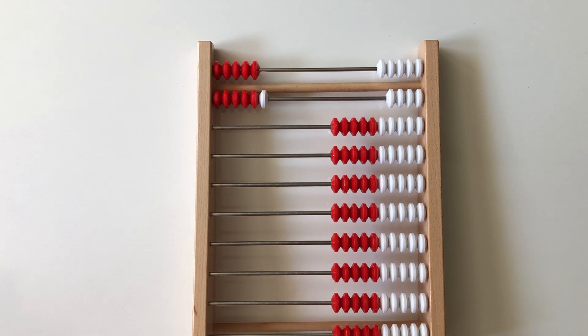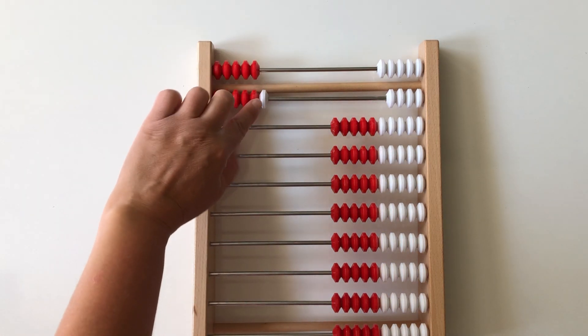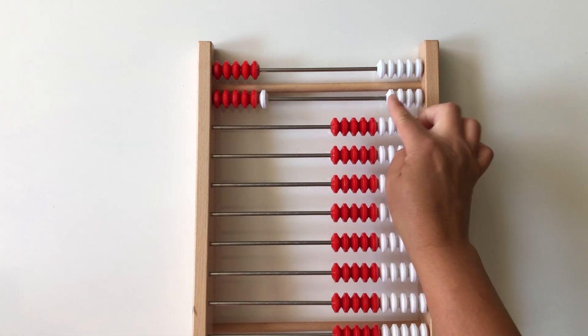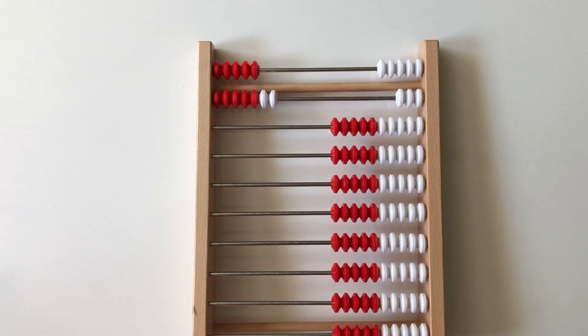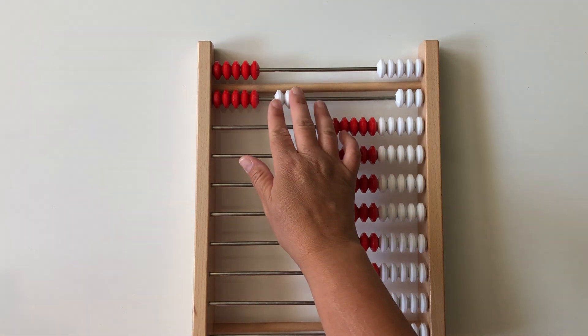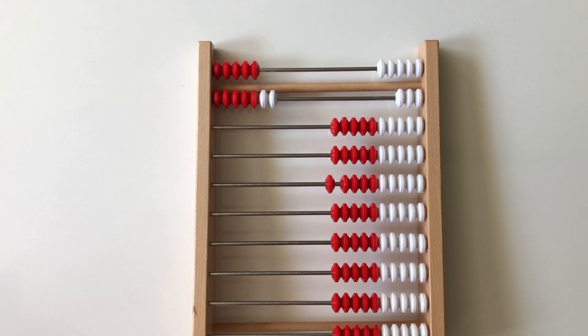Or we could show 5 plus 7. Again, this makes it very visual, very easy to see that to solve 5 plus 7, we can think 5 plus 5 is 10 and 2 more makes 12.